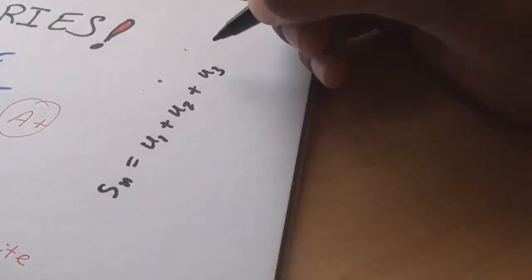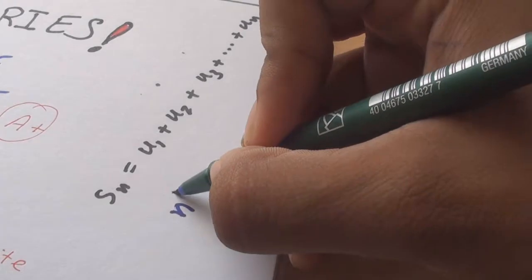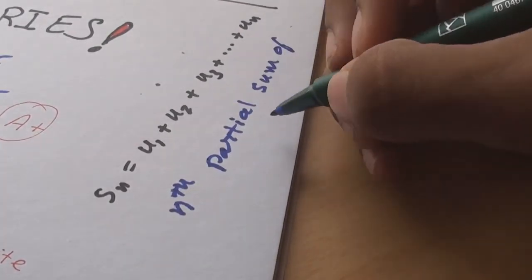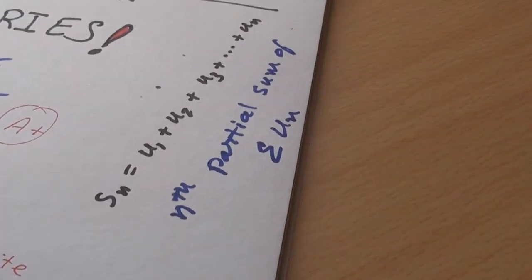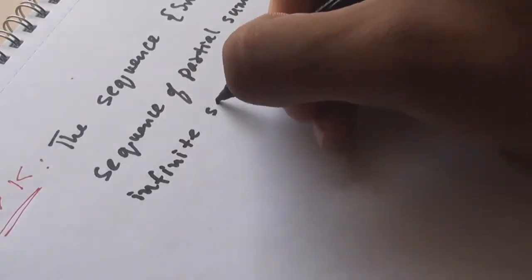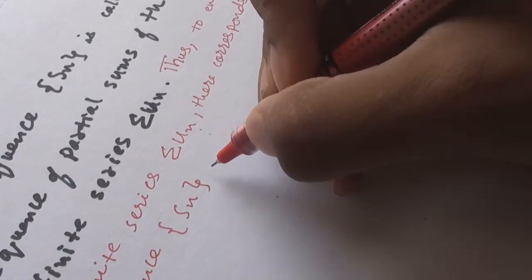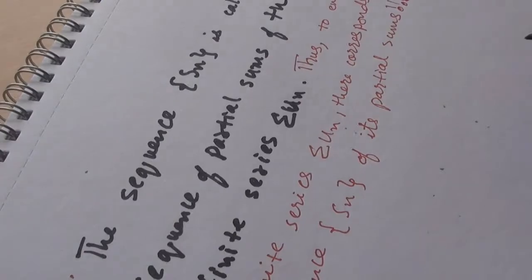The sum of the first n terms of a series denoted by Sn which equals u1 + u2 + ... + un is called the nth partial sum of un. Also, the sequence {Sn} is called the sequence of partial terms of the infinite series un. Thus, to every infinite series un, there corresponds a sequence Sn of its partial sums. But nobody cares.